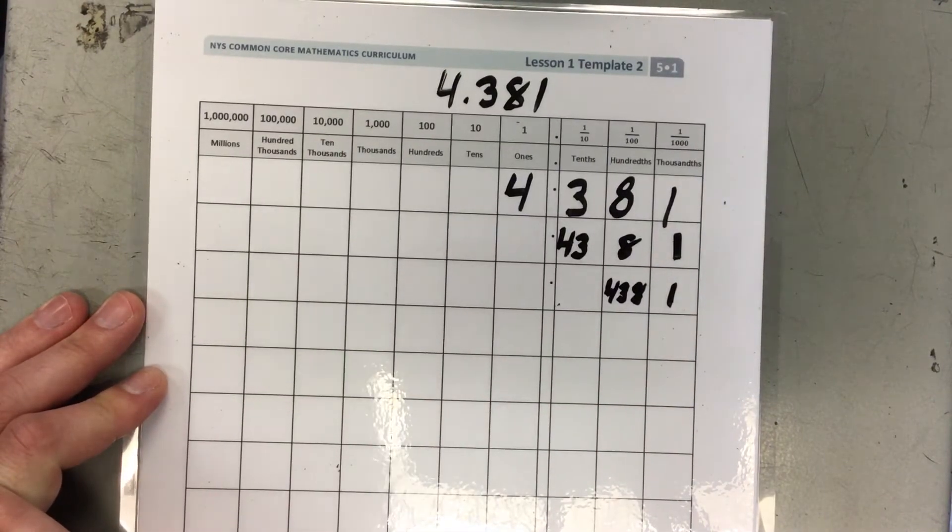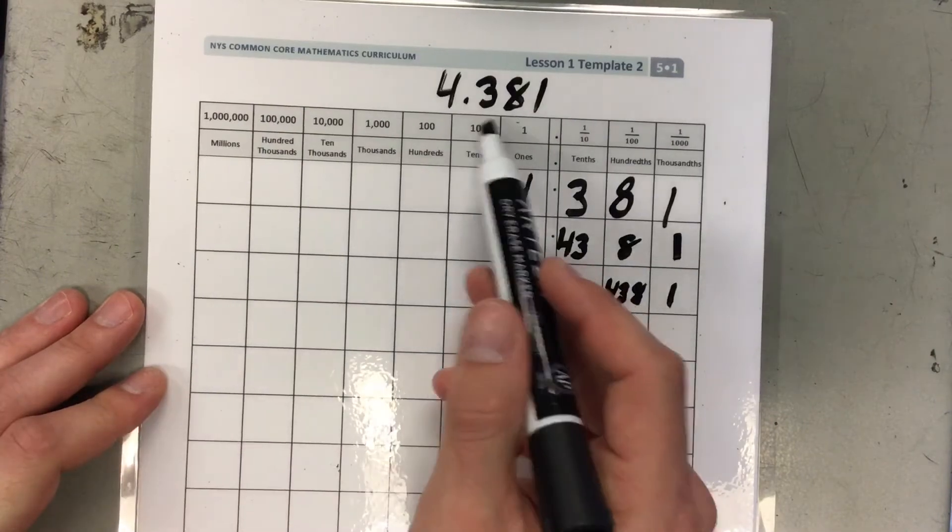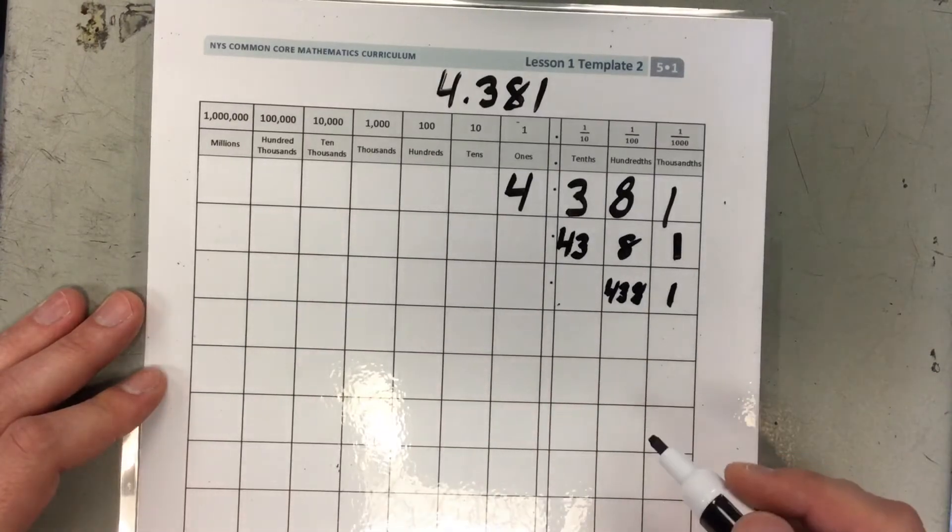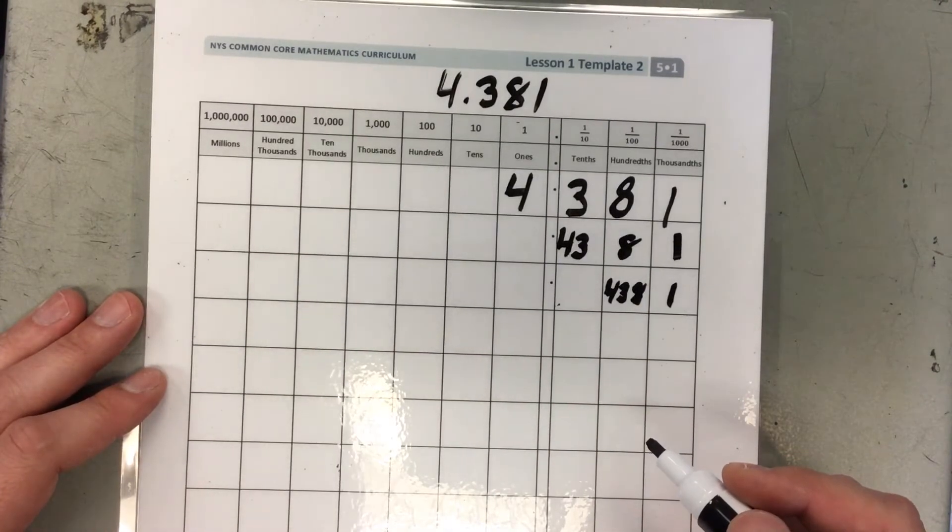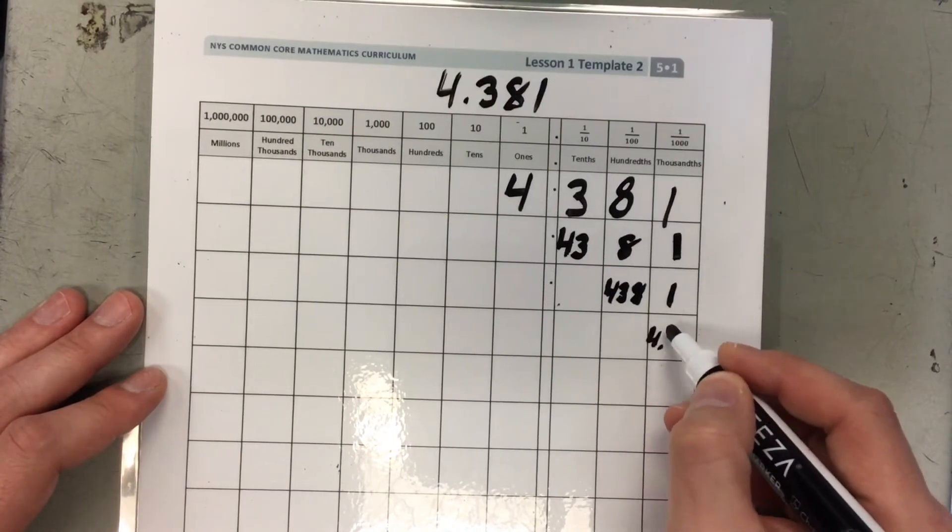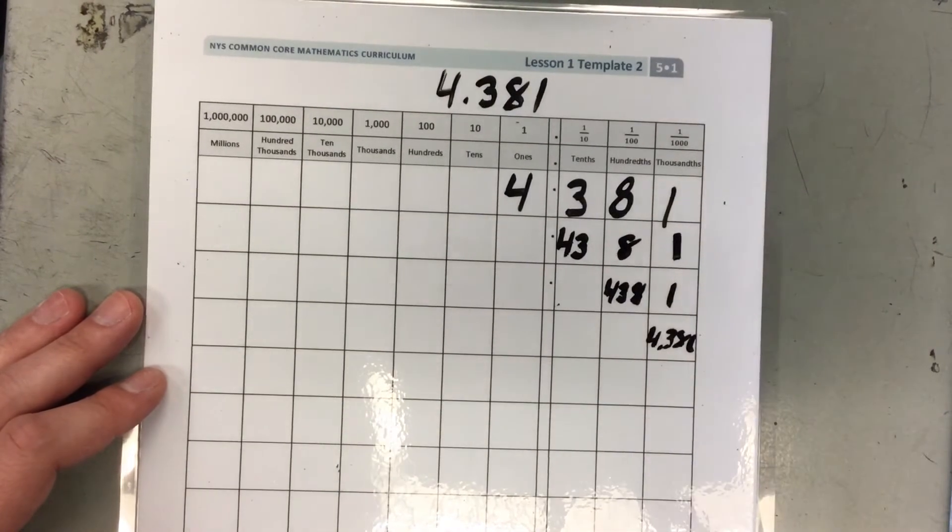Let's do the same thing with thousandths. Now we're trying to name this number in unit form only using thousandths. Go ahead and pause this video and see if you can do it on your own. So that would be 4,381 thousandths.